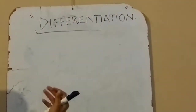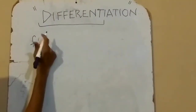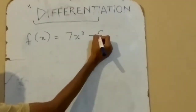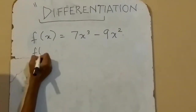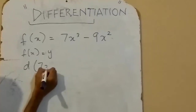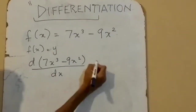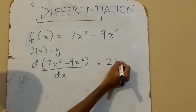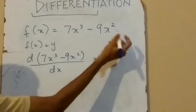Now I am going to differentiate another equation for more practice. We can say that f(x) is basically equal to y, so dy upon dx would be equal to 3 times 7 which is 21, with a reduction of 1 in the power giving 21x². Then 2 times 9 is 18, so it would be minus 18 with a reduction of 1 in the power, giving minus 18x.